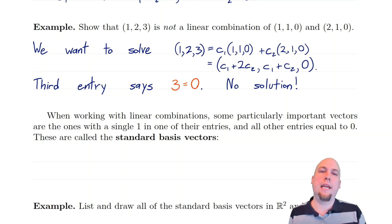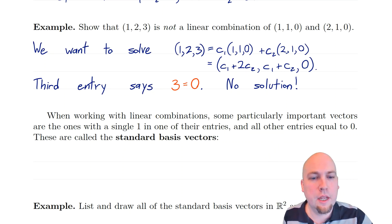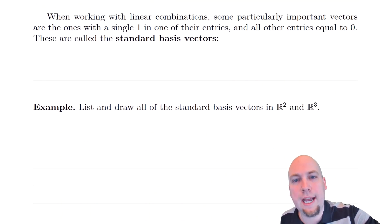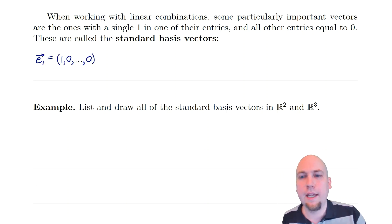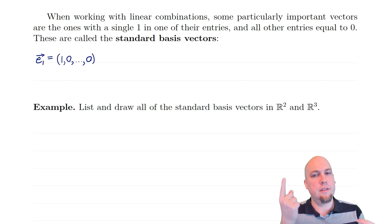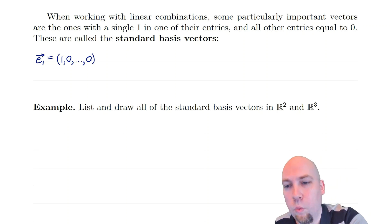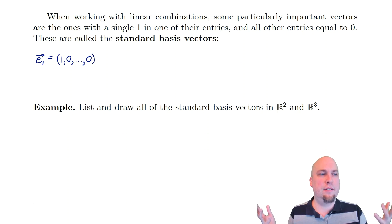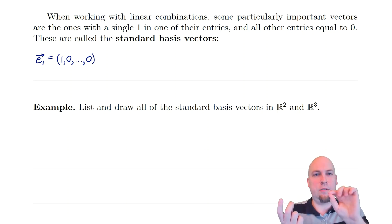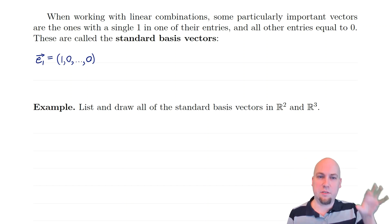Our reason for looking at linear combinations is that in linear algebra we often take a small set of starting vectors and use them to construct very large sets of vectors via linear combinations. One of the most common sets of starting vectors are called the standard basis vectors. These are very useful because we can build lots of things from them. They're just the vectors that have a single one in one of their entries and zeros everywhere else. The first standard basis vector has a one in its first entry and zeros everywhere else — we call it e1. If I ever say e1, I'm always talking about this specific first standard basis vector. Similarly, e2 is the vector with a one in the second entry and zeros everywhere else.